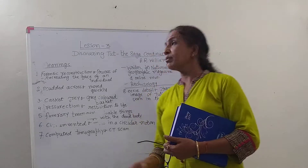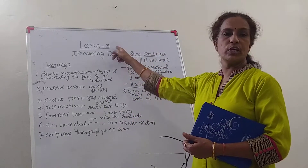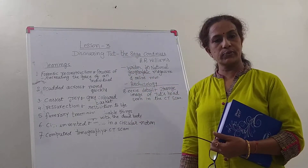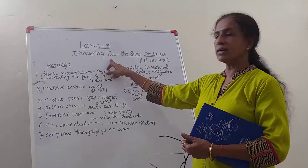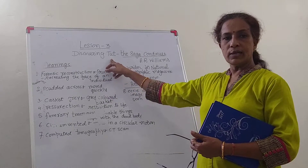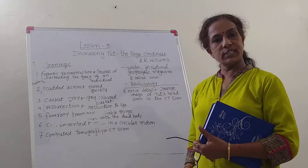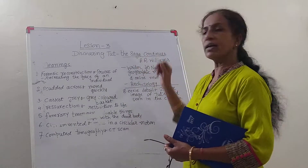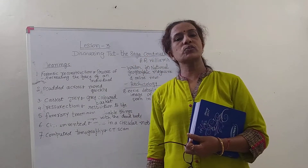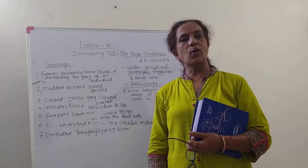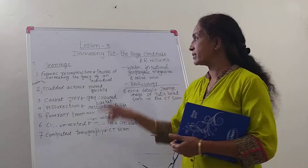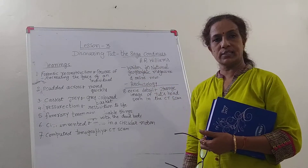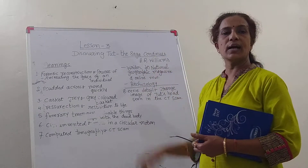Hello children, welcome to Lesson 3 of Johan Bill, discovering that the Saga continues. The Saga refers to the royal king of Egypt. There is a mystery behind his death because he died at a very early age, at a young age. And that is why the Saga continues.